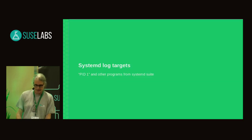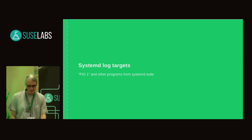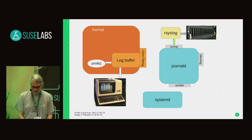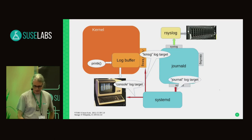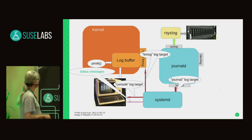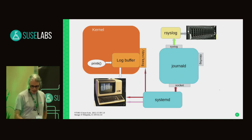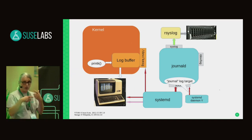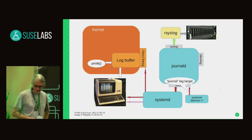Then we have the various forwarders — and one more is "wall", which prints emergency messages to all terminals. Next are the log targets of systemd — PID 1 and the various other programs from the systemd suite. Systemd can log its own messages to various places: we have the console log target, the kmsg log target, and the journal log target. There are also status messages — not log messages — which are only printed to the console. Other daemons from the systemd suite like systemd user instances, logind, networkd, and hostnamed all have the same approach to logging with the same targets.